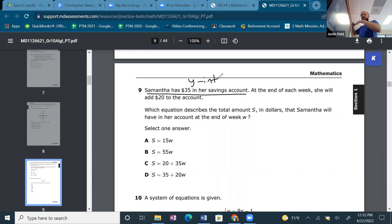Right now, she has $35. Good job, Samantha. At the end of each week, she will add $20. Each week, I'm thinking that's a slope. So already in my head, I'm thinking 20x + 35.